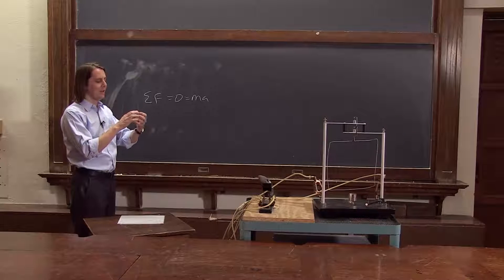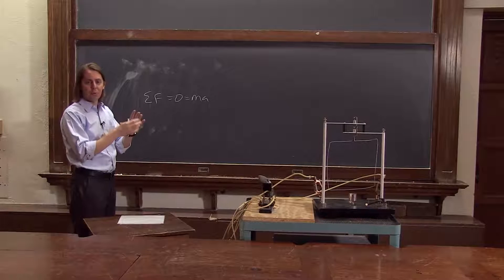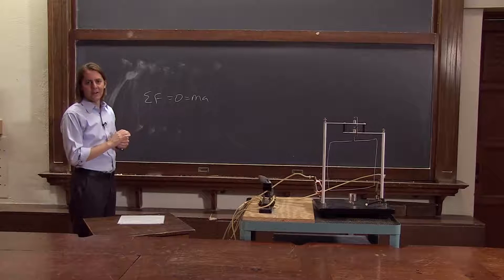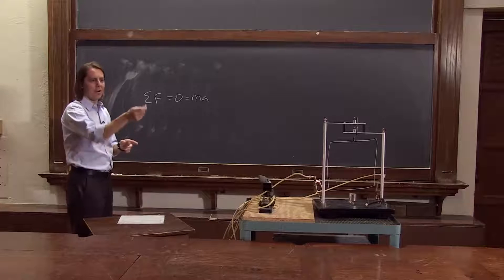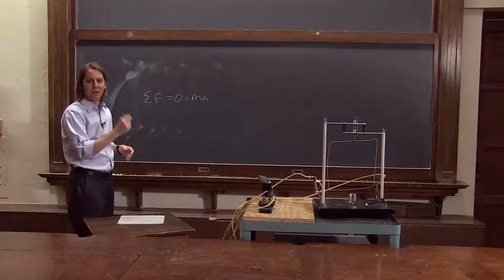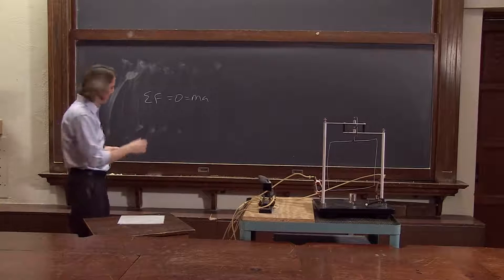applies to a point particle, really. Just to an individual mass. It has no degrees of freedom to be deformed or to rotate or anything like that. And what we have here, our square loop, is much more than a point mass. It's a square loop. It can rotate.